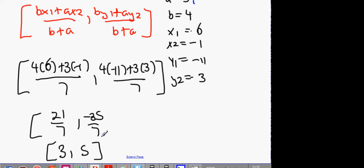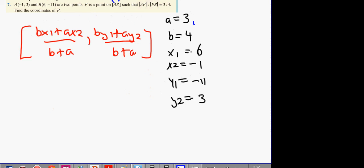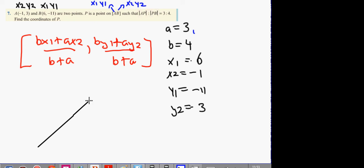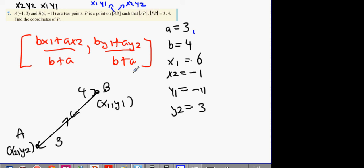There is a way to fix this. If we start from B and say B is x1, y1, and A is x2, y2 — because of the way the formula is set up, A is the ratio from your x1, y1 to the middle point, and B is the ratio from that point to x2, y2. So basically what happened was: when we mixed up the points, we also had to change A and B. When I change to A equals 4 and B equals 3, let's see if it works.